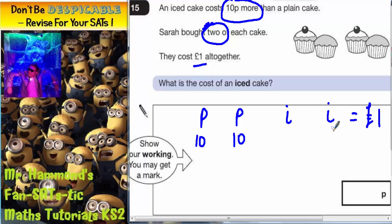Now the iced cakes would have to be 20p because they are 10p more. If it's 10p more than a plain cake, an iced cake would have to be 20p.